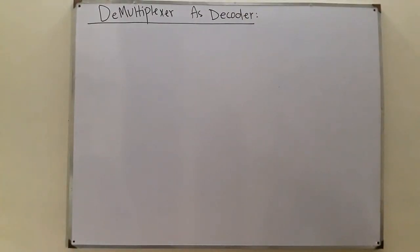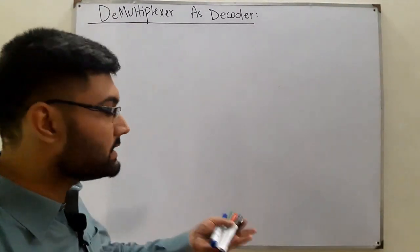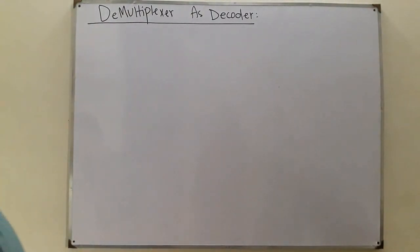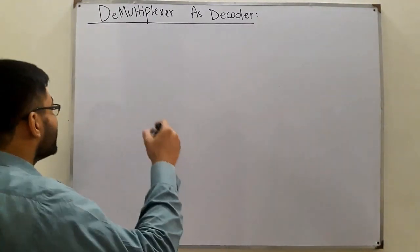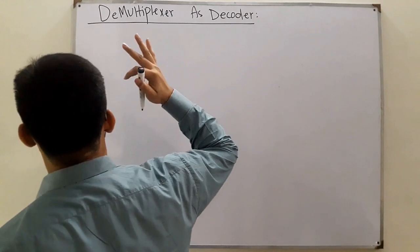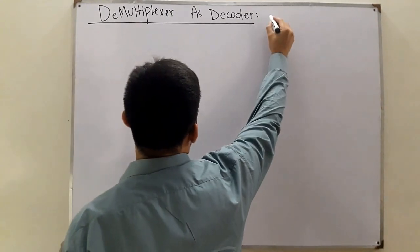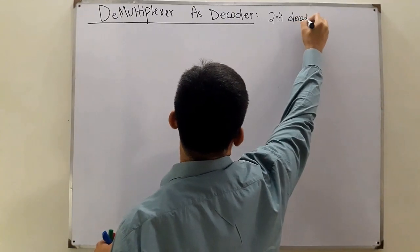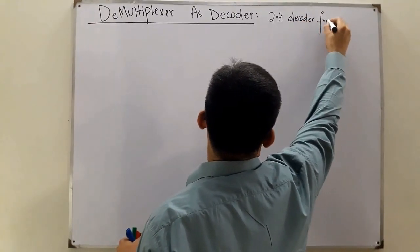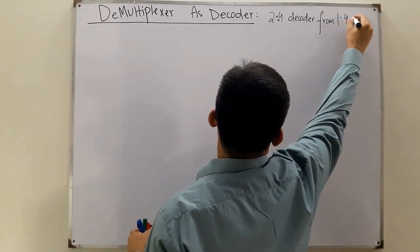You need to know what a demultiplexer is and what a decoder is. You need to know both things. In this scenario, we obtain a 2x4 decoder from a 1x4 demux.